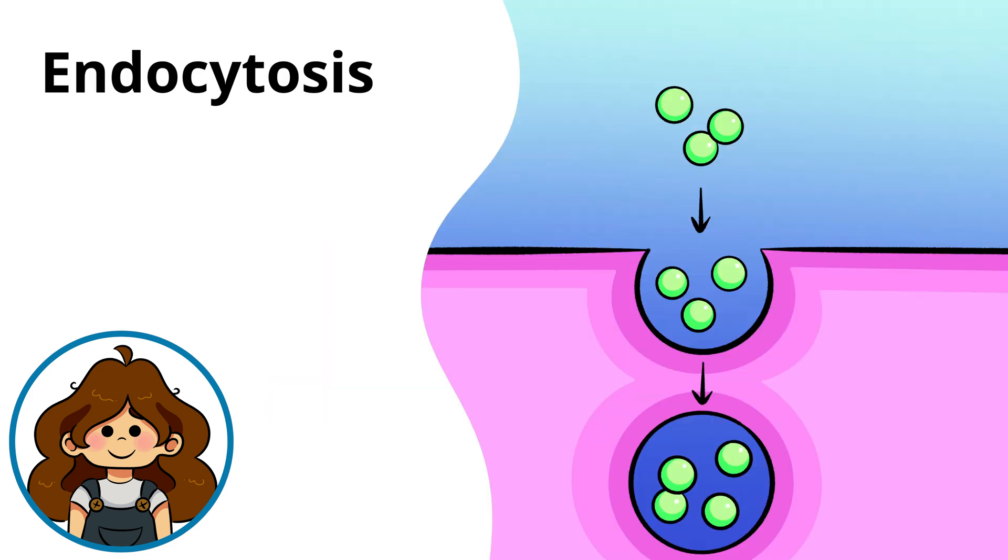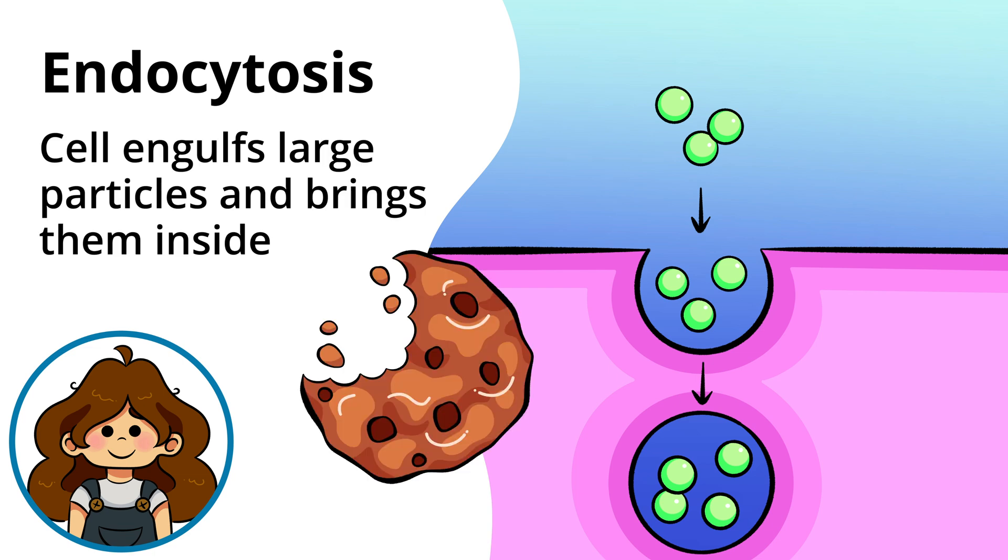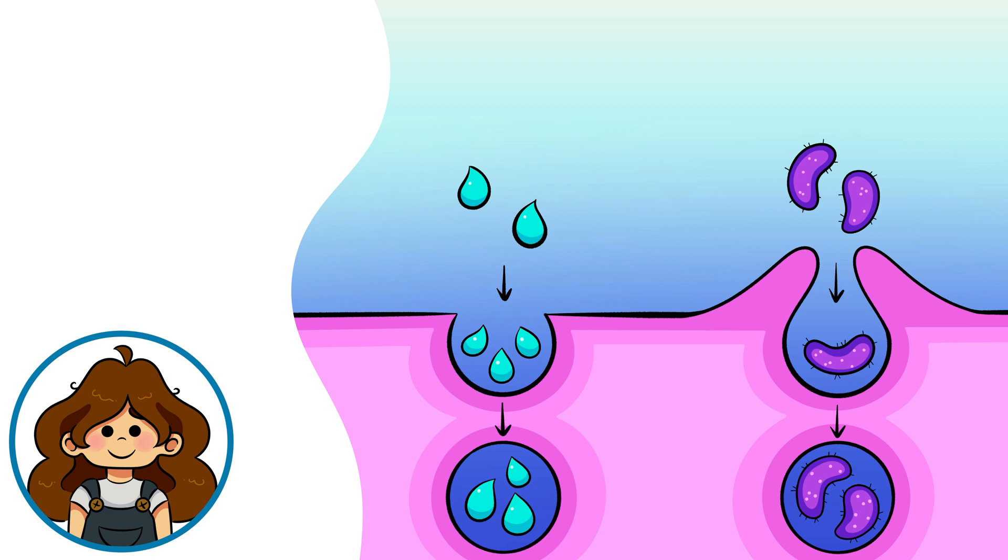Next, there's endocytosis, where a cell engulfs large particles by wrapping its membrane around them and bringing them inside. It's like the cell is taking a big bite. Yummy!